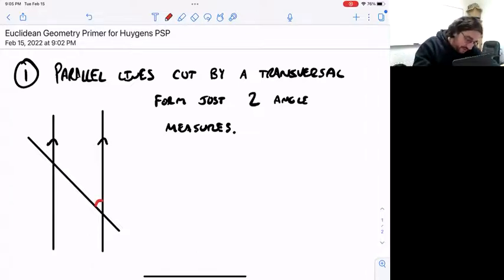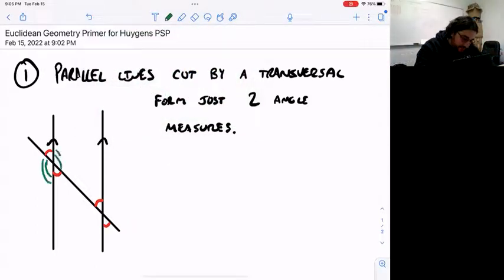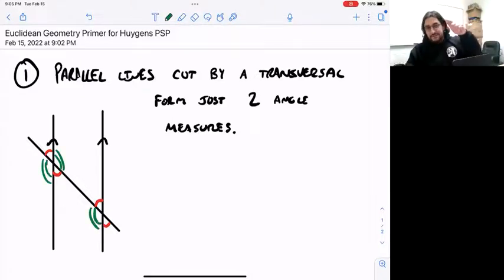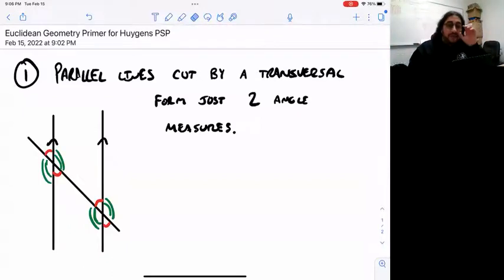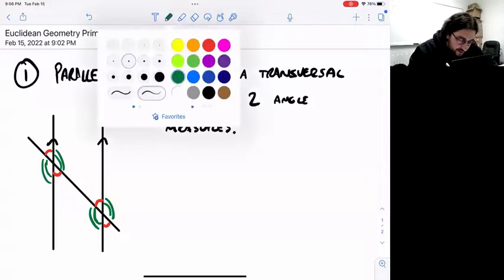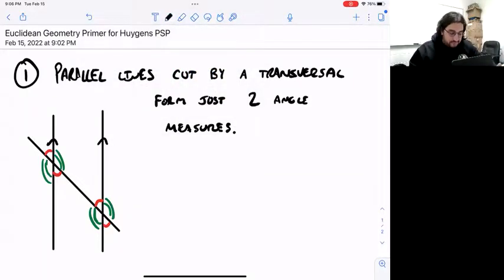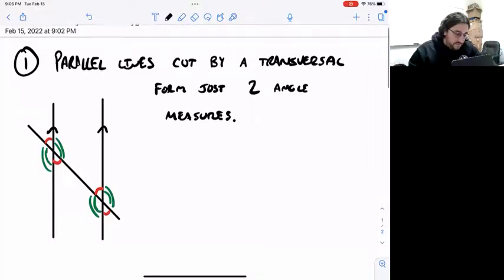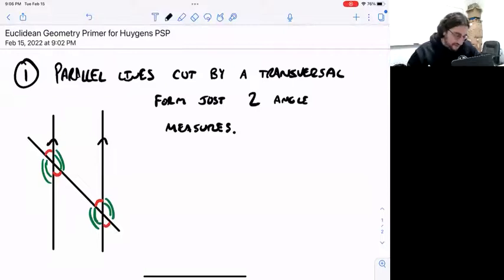There are what they call the alternate interior angles that are equal, congruent angles. Those are equal to the angles opposite of them. And you also have these here, the larger angles, which are also alternate interior. So all the angles that I marked red have the same measure, all the angles I marked green have the same measure. This is one very useful fact in Euclidean geometry. In particular, it's going to come up a lot in the Huygens Carpenter primary source project.